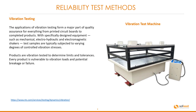Vibration testing. The applications of vibration testing form a major part of quality assurance for everything from printed circuit boards to completed products. With specifically designed equipment such as mechanical, electro-hydraulic, and electromagnetic shakers, test samples are typically subjected to varying degrees of controlled vibration stresses. Products are vibration tested to determine limits and tolerances, as every product is vulnerable to vibration loads and potential breakage or failure. You can see here a typical vibration test machine.